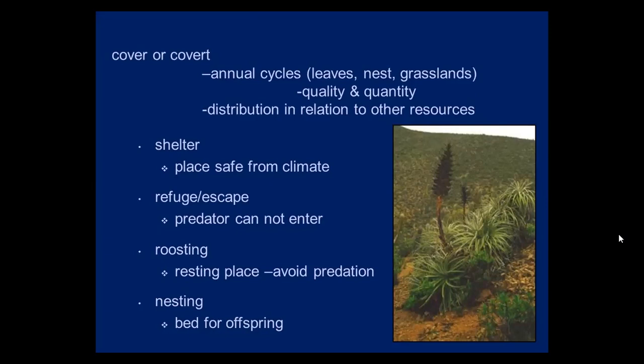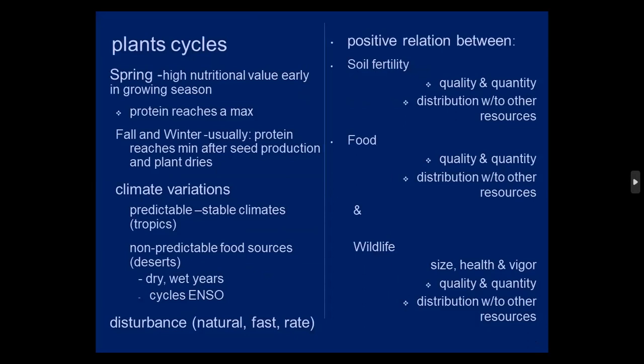Roosting is a place to rest and avoid predation; nesting is where you have offspring until they're old enough to move. In spring, plants have high nutritional value early in the growing season — protein reaches a maximum. In fall and winter, protein reaches a minimum after seed production and the plant dries. Predictable stable climates like the tropics have year-round food. Non-predictable food sources are deserts like where we are — usually dry but with normal rainfall, and then extended droughts, and then El Niño, which usually gives a lot of precipitation. We see populations grow after El Niño.